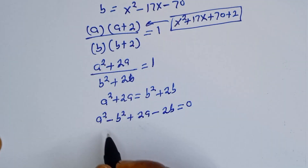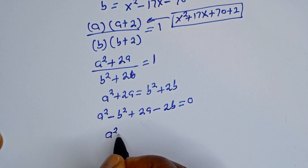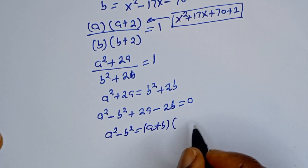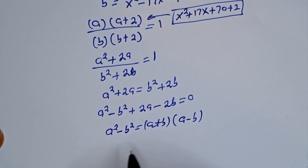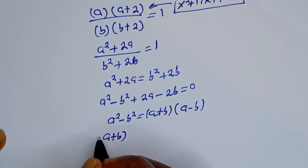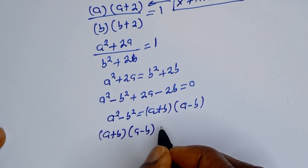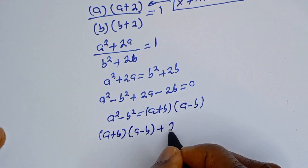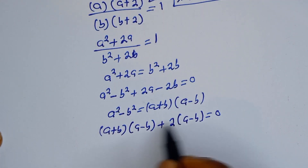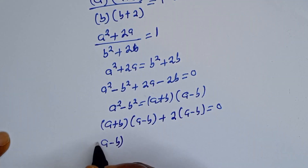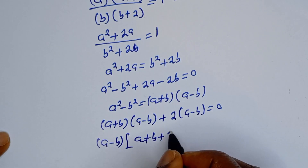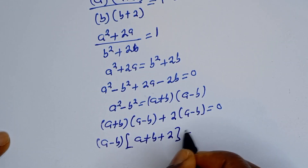Now if we look at these two terms, this is a difference of two squares. A squared minus B squared equals A plus B, bracket A minus B. So we have A plus B bracket A minus B, plus 2 bracket A minus B, equals 0. Now A minus B is common — factoring it out gives A minus B, bracket A plus B plus 2, equals 0.